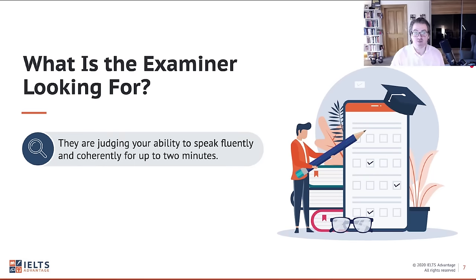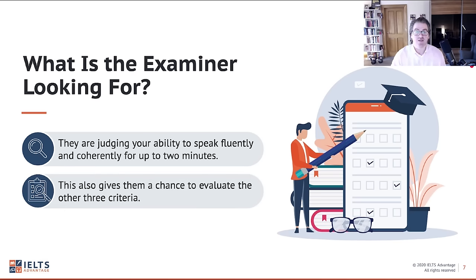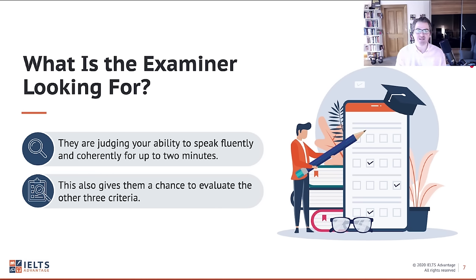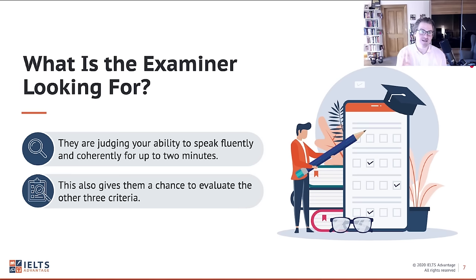So what is the examiner looking for? They're judging your ability to speak fluently and coherently for up to two minutes. This also gives them a chance to evaluate the other three criteria: pronunciation, grammar, and lexical resource — which means vocabulary. You're speaking for up to two minutes, giving the examiner a chance to sit back and really listen to you, which indicates that part two is extremely important. If you're messing up this question, you're not only lowering your fluency and coherence scores, you're probably also lowering your grammar, vocabulary, and pronunciation scores. Students who follow our strategy not only nail fluency and coherence — they do really well in all four marking criteria because they're just speaking naturally and fluently.